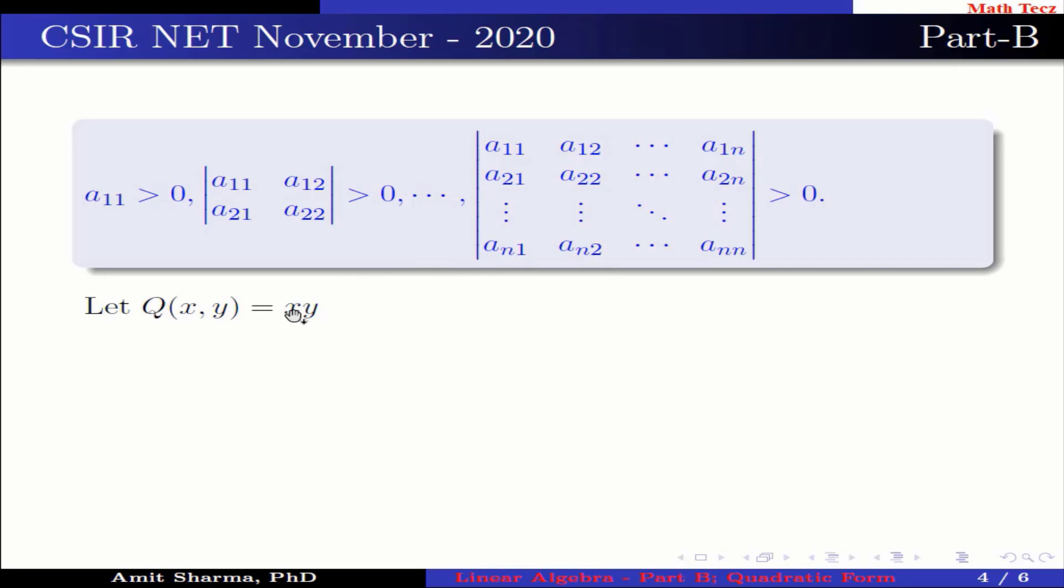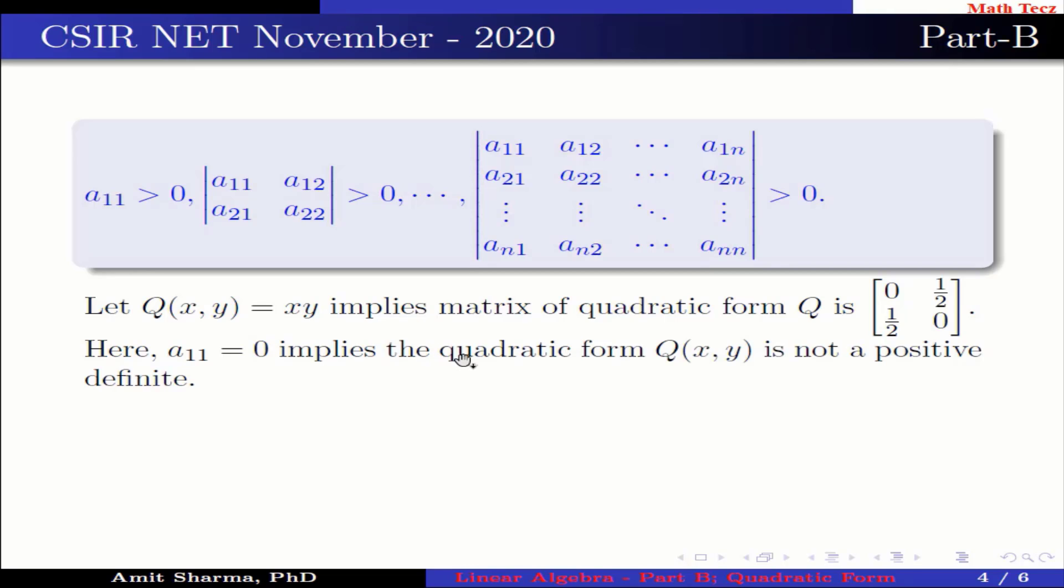Let Q(x,y) = xy. This implies the matrix of quadratic form Q is a 2×2 matrix having elements 0, 1/2, 1/2, 0. Here, a₁₁ = 0, which implies the quadratic form Q is not positive definite. Therefore, option A is wrong.